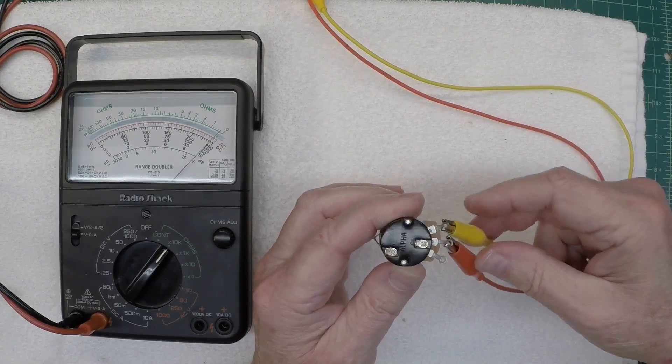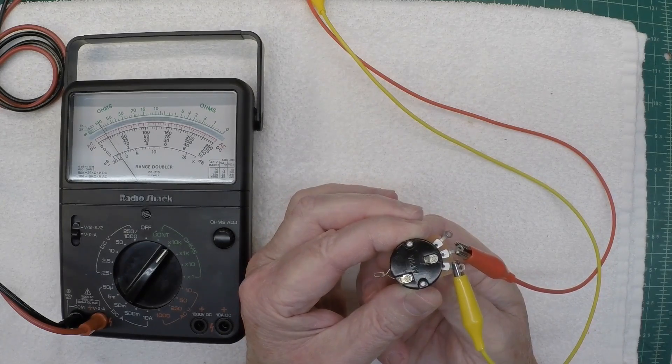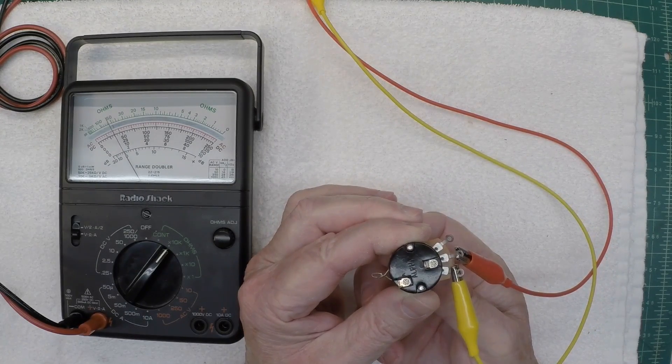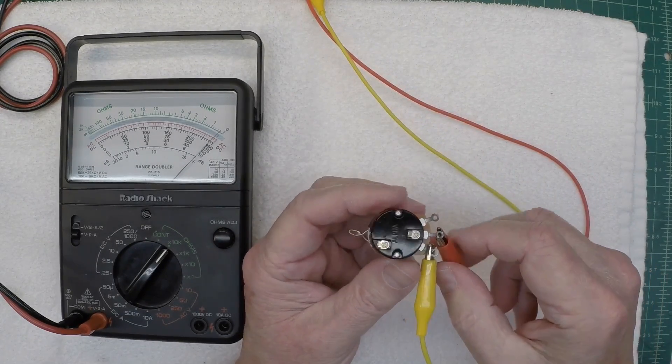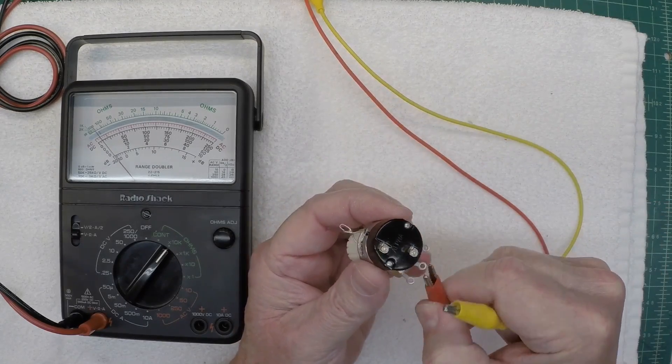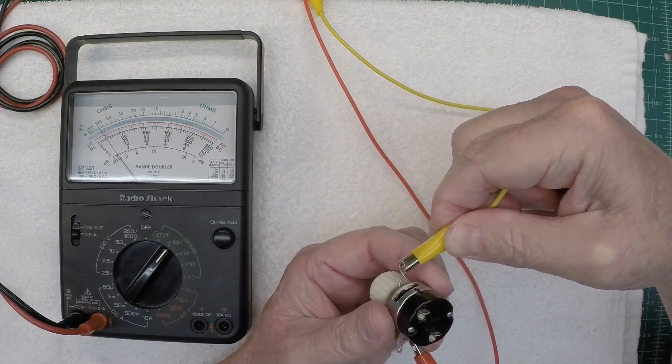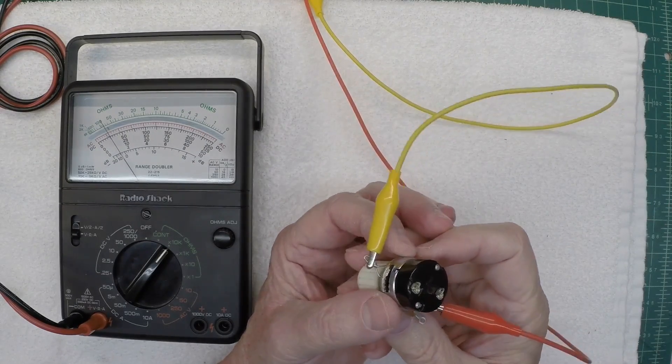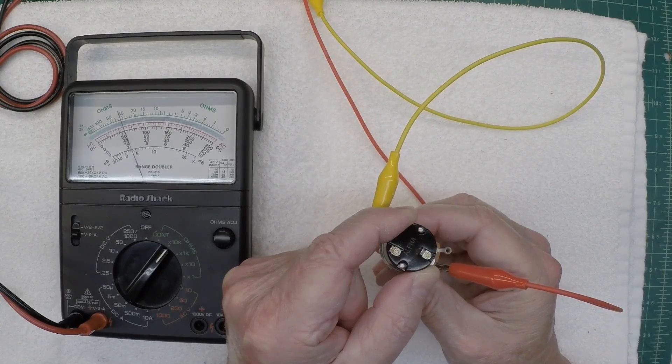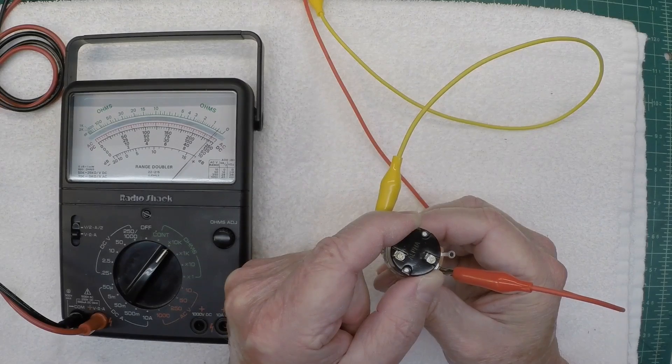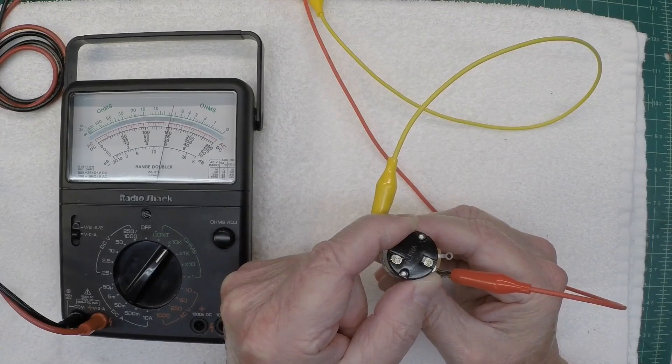Let me switch this one lead here back to the wiper, and then we'll check the rotation of the pot just to make sure it's nice and smooth. And that's tracking the way it should. Let me reverse the leads. Run it back through the rotation this way. All right, that's tracking well. Let me leave the one lead here on the wiper itself, and we'll go back to our tap location now. And run this through the rotation.